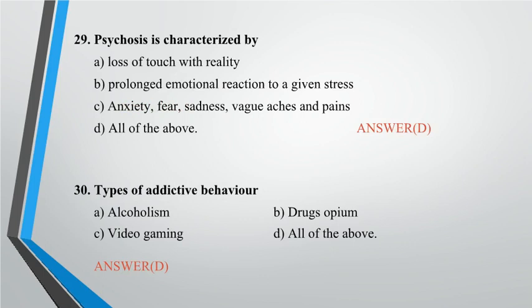Question 30: Types of addictive behavior — A. Alcoholism, B. Drugs/opium, C. Video gaming, D. All of the above. Answer: D.